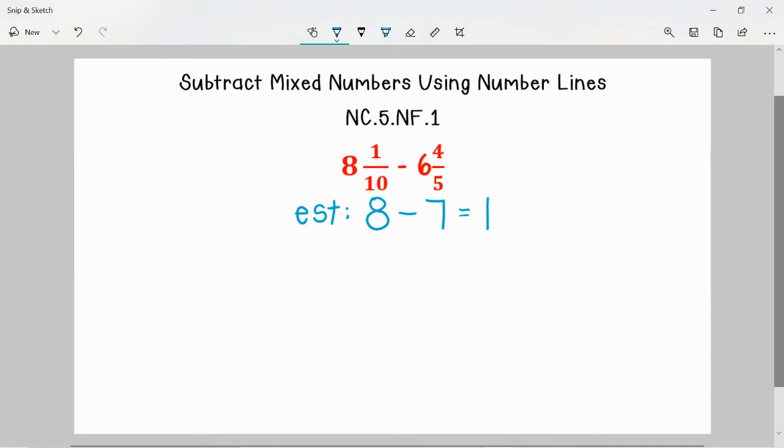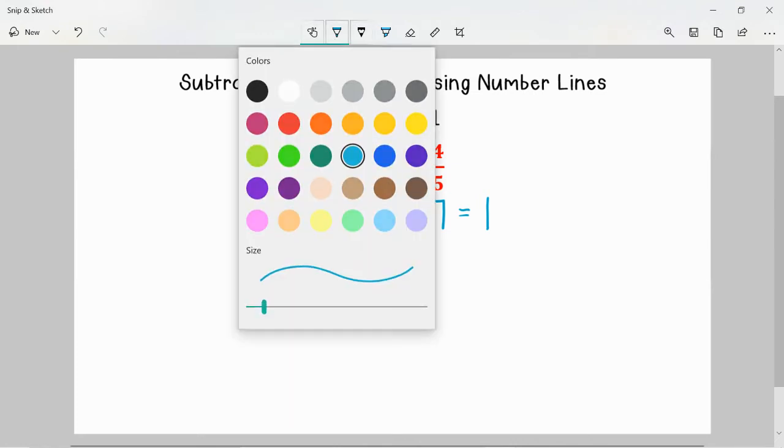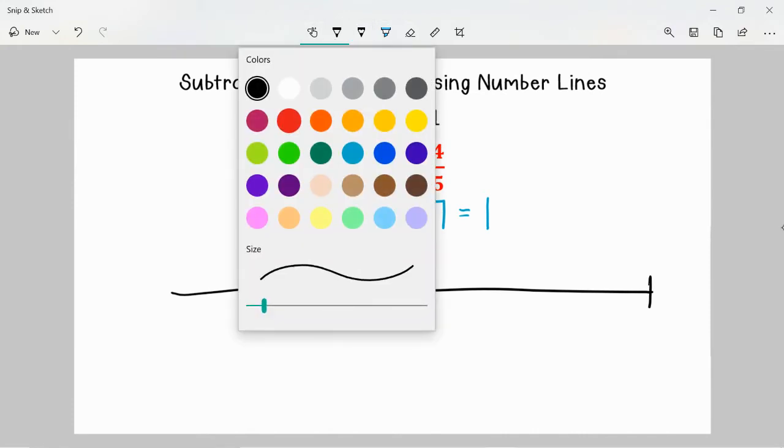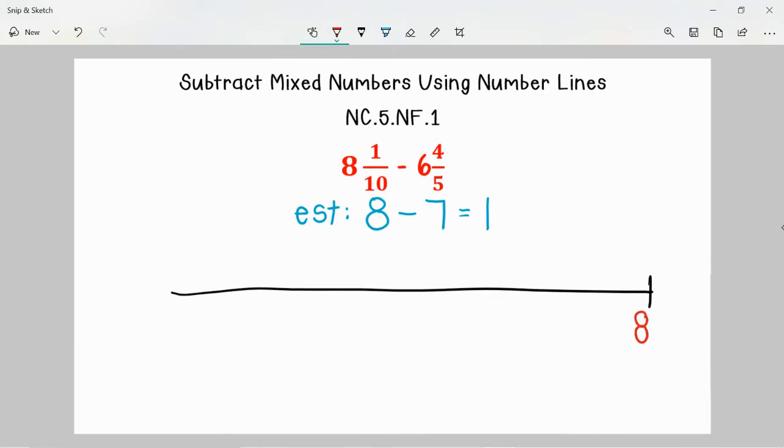So to begin to solve we are going to draw an open number line. I am going to start at the end here with the amount that we are subtracting from which is 8 and 1 tenth. Now I know that I need to subtract 6 and 4 fifths from 8 and 1 tenth. The first thing I can do is just go ahead and subtract the 6 wholes. So if I subtracted 6 wholes from 8 and 1 tenth I know I would be at 2 and 1 tenth.